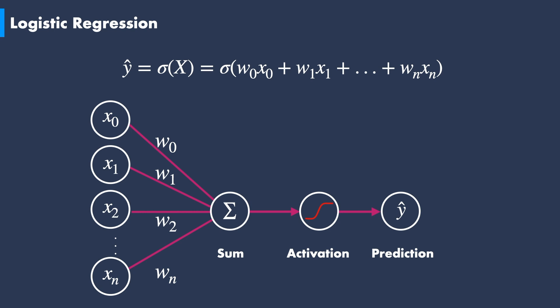Consequently, using the sigmoid as an activation function, the prediction formula will give us different values of probabilities between 0 and 1. Following machine learning conventions, every time we have a probability value bigger than 0.5, we assign the value 1 to the prediction label. On the other hand, any time we have a probability value lower than 0.5, we assign the value 0 to the prediction label.